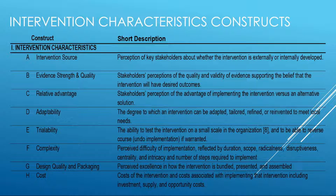There is a very specific layout of concepts within each construct area. Within CFIR, each concept is described. In the construct of intervention characteristics, this includes the intervention source, evidence strength and quality, relative advantage of the intervention, adaptability, trialability, complexity, design and quality and packaging of the intervention, and most importantly, the cost. Each are described in detail.